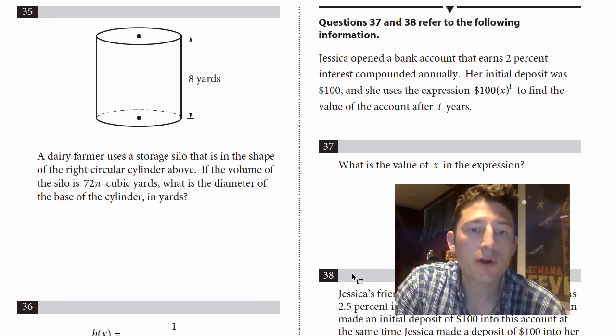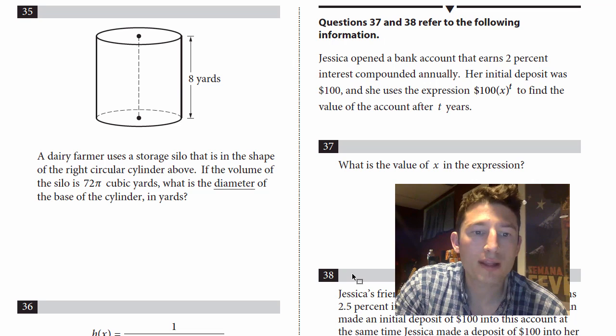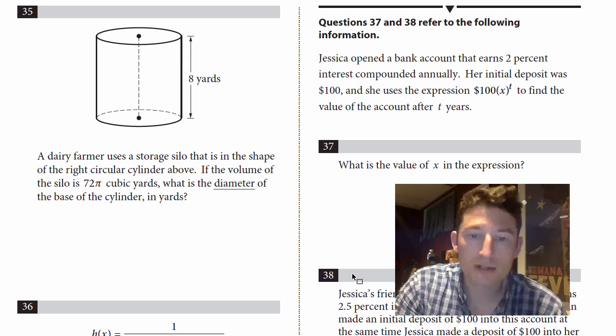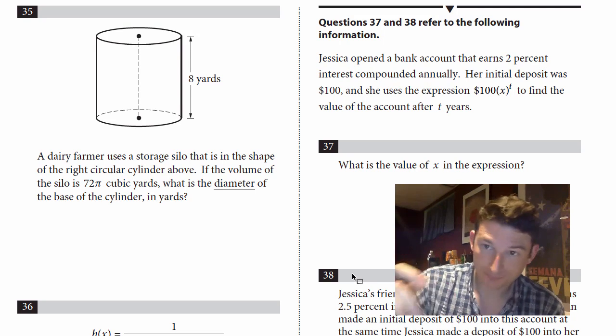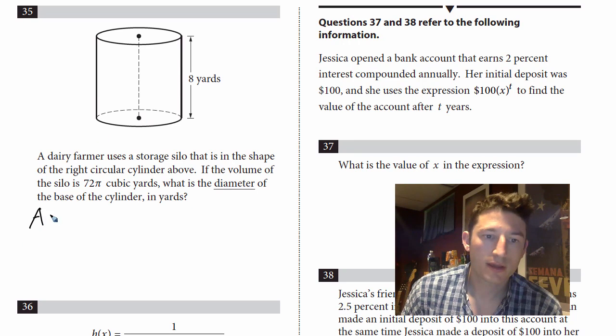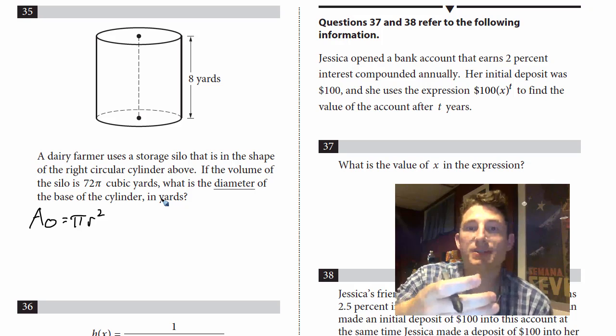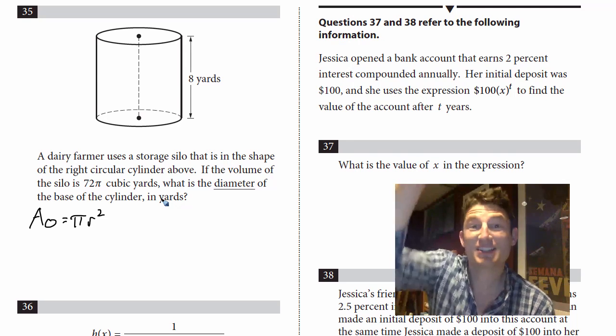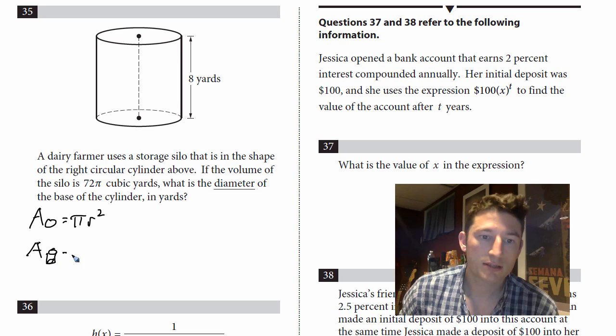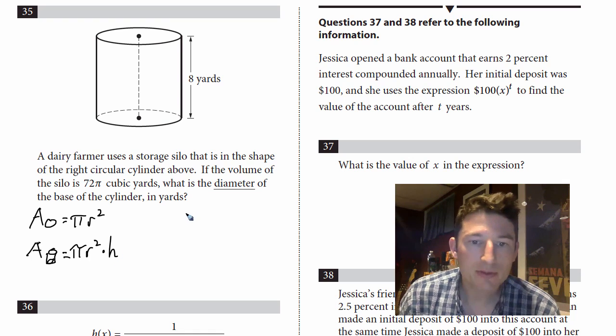All right. Number 35 says, a dairy farmer uses a storage silo that is in the shape of a right circular cylinder above. If the volume of the silo is 72 pi cubic yards, what is the diameter of the base of the cylinder in yards? Well, all you got to know is, first thing I know is what's the area of a circle. Area of a circle is pi r squared, right? So if you have a circle, what is a cylinder? It's just taking that area and extending it with height. Okay. So the area of a cylinder, I'll try and draw my best cylinder here. That's all right. Is pi r squared h.